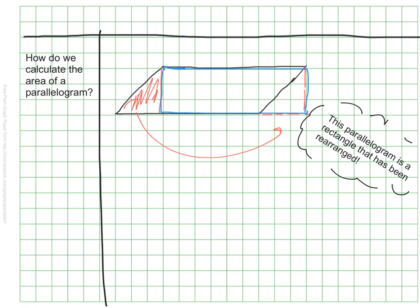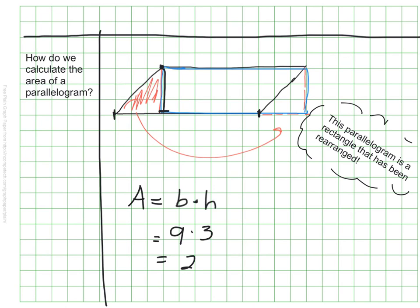Because this parallelogram is simply a rectangle that's been rearranged, we can find the area the same way we find the area of a rectangle — by multiplying the base times the height. Going back to my example, my base is 9 units. And my height — if I go to the top of my parallelogram and drop straight down to the bottom — is 3. Therefore, my area is 27 square units.